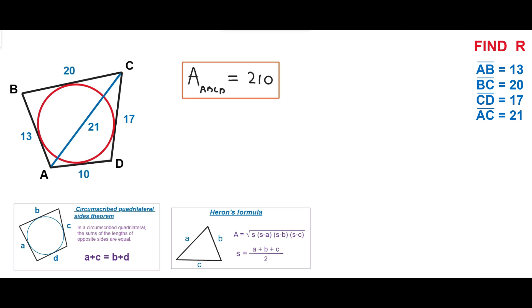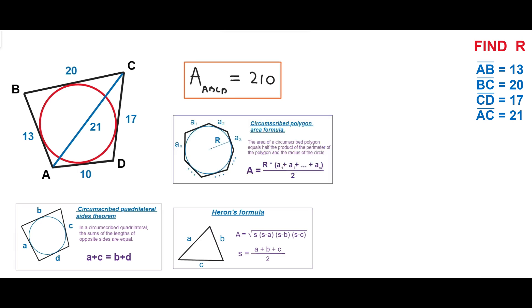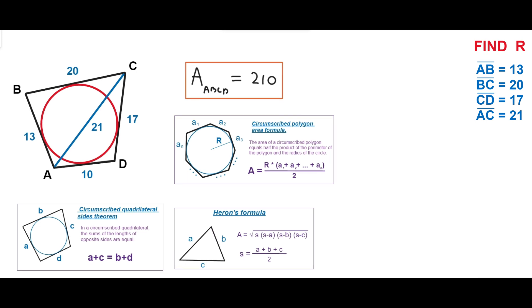Now it's time to remember the general formula for a circumscribed polygon area. The area of a circumscribed polygon, regardless of the number of sides, can be calculated by multiplying the radius of the inscribed circle by the perimeter of the polygon and dividing by two.